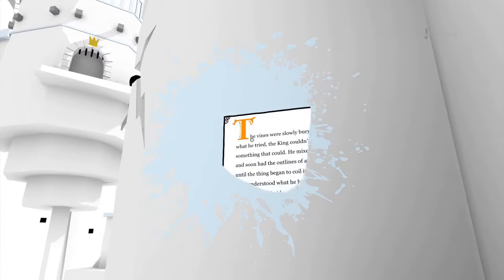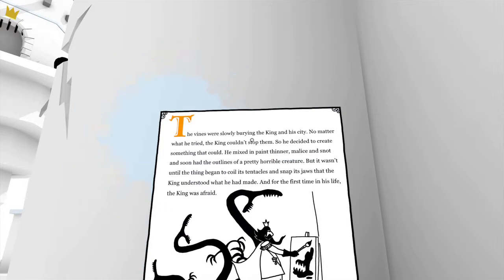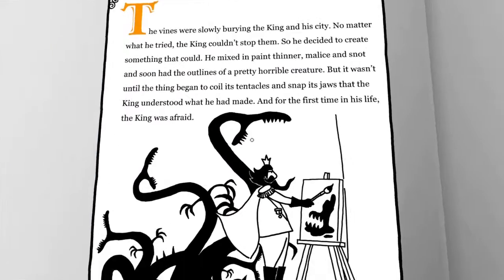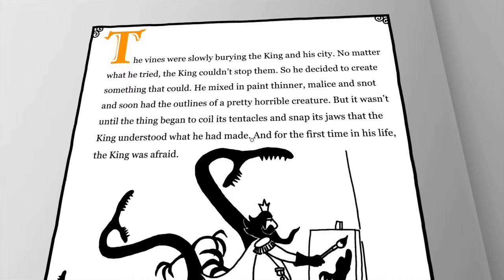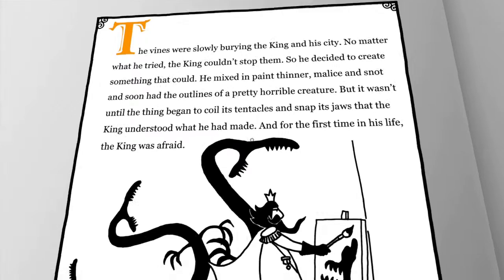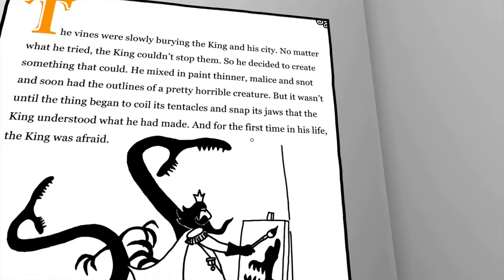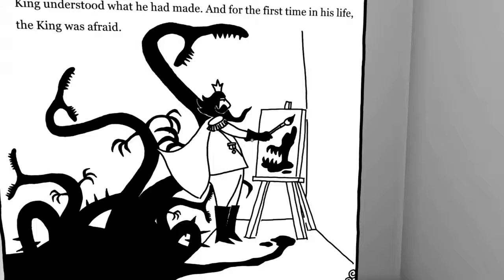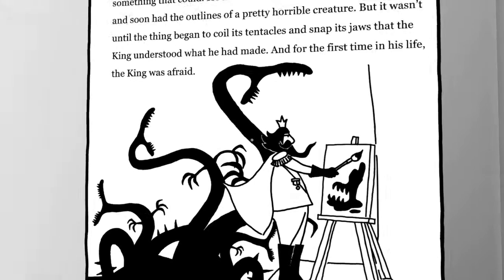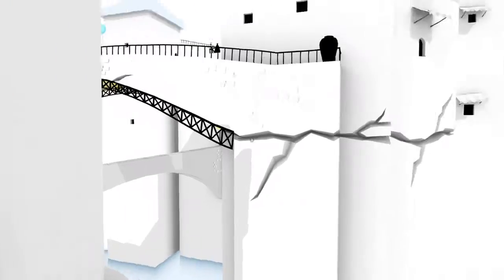Let's get some quick story. The vines were slowly burying the king and his city. No matter what he tried, the king couldn't stop them. So he decided to create something that could. He mixed in paint thinner, malice, and snot, and soon had the outlines of a pretty horrible creature. But it wasn't until the thing began to coil its tentacles and snap its jaws that the king understood what he had made. And for the first time in his life, the king was afraid.